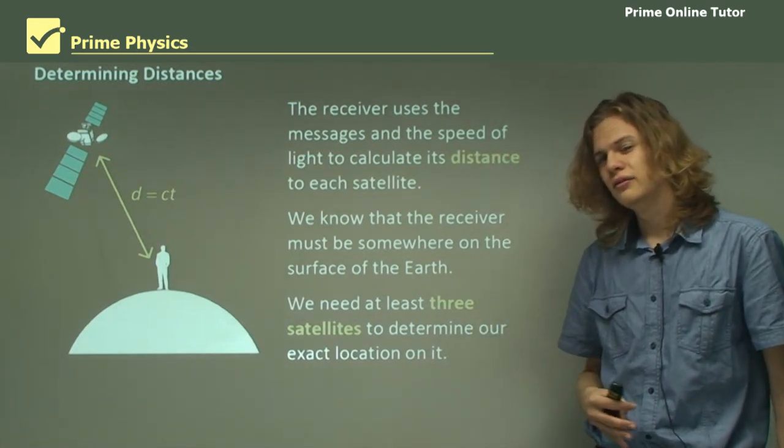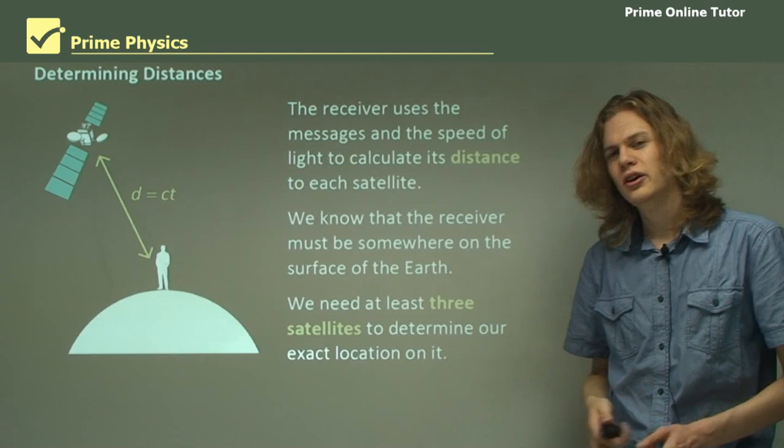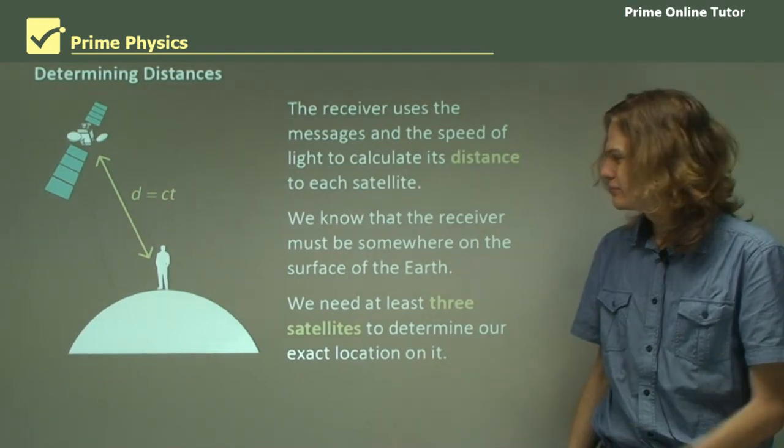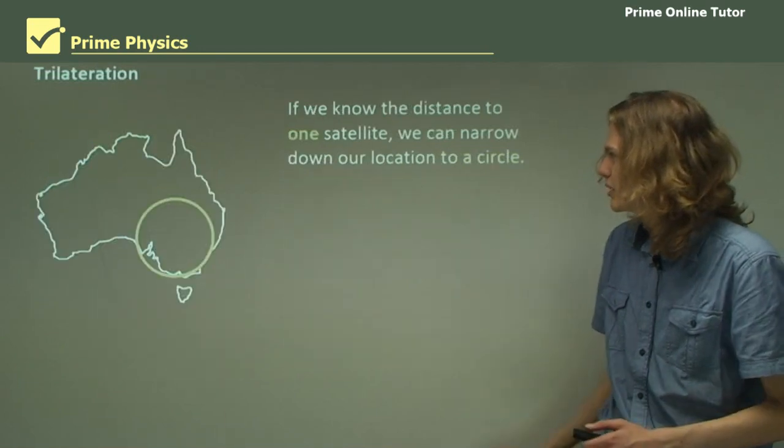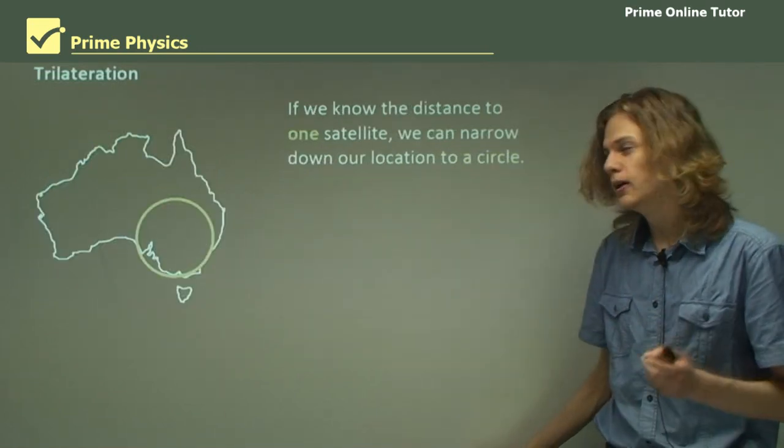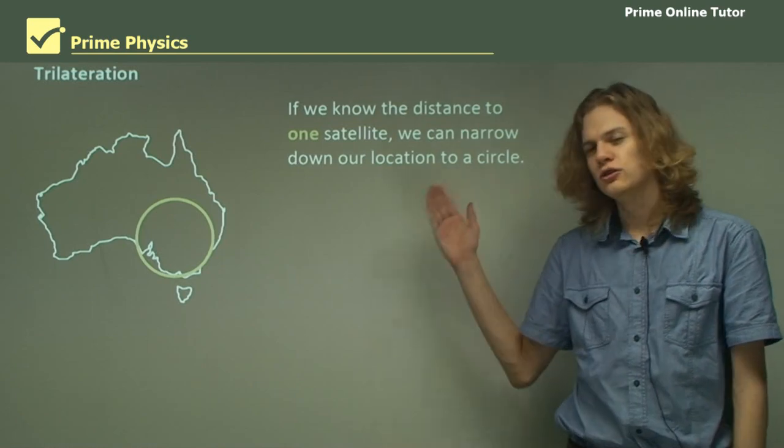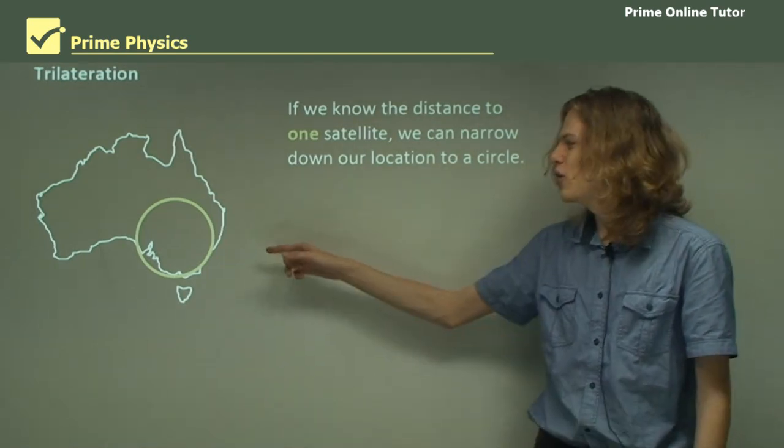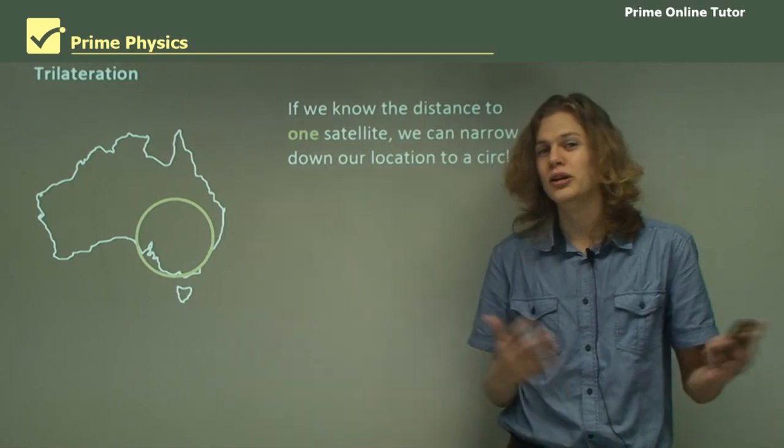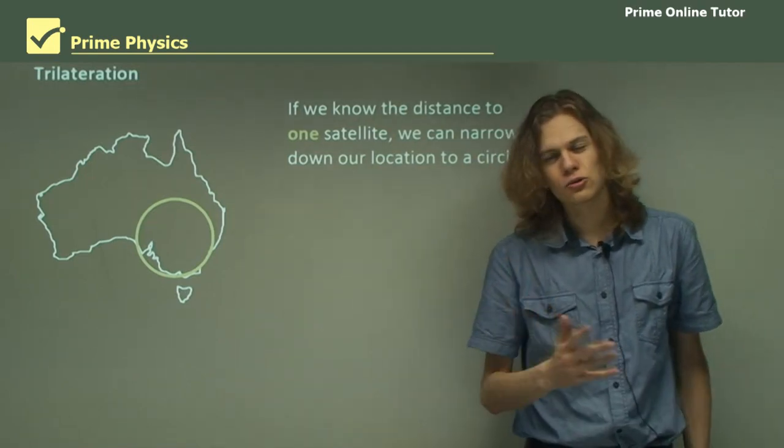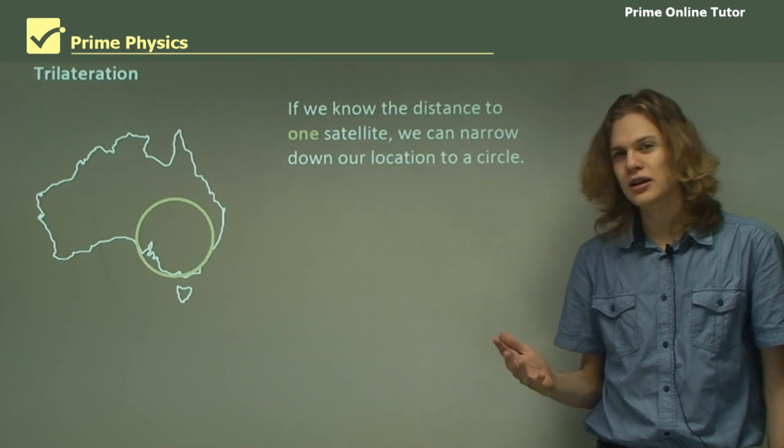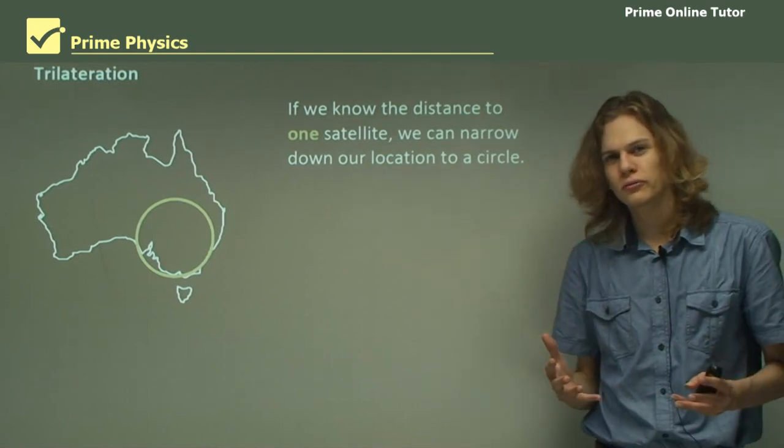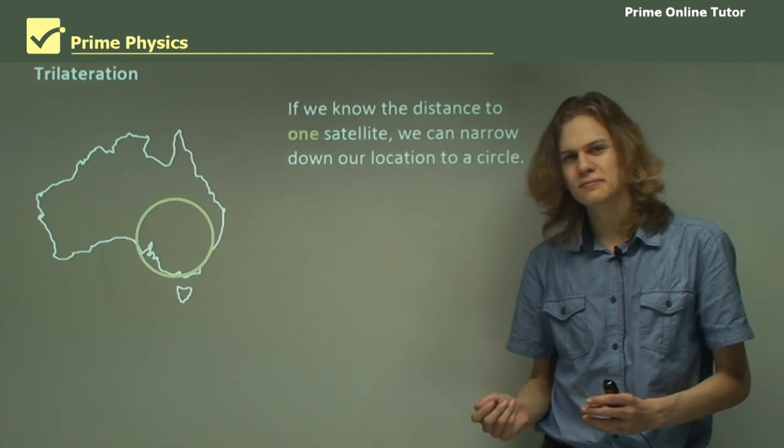At any point on the Earth's surface, you'll always have at least three satellites communicating with you. So if we know the distance to one satellite, then we can narrow down our location to a circle. We're not somewhere inside the circle, we're somewhere on the edge, but we have no idea where.